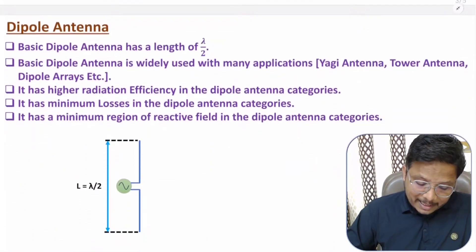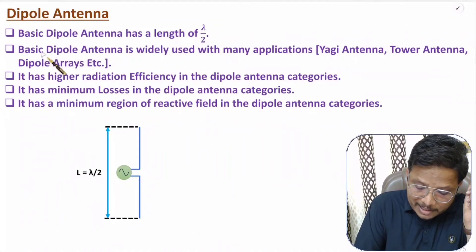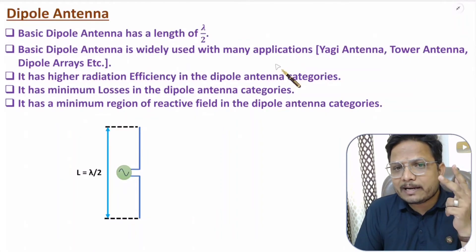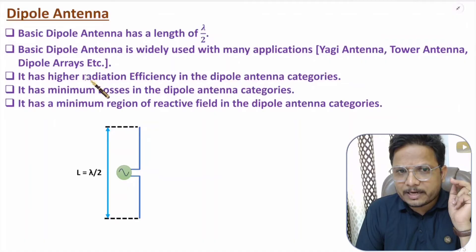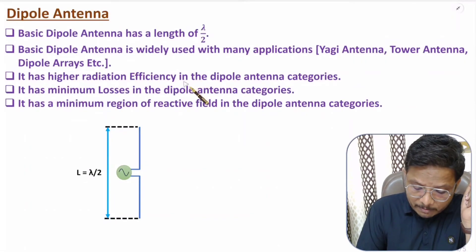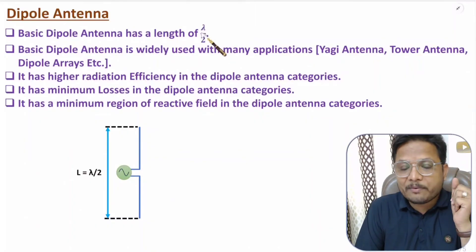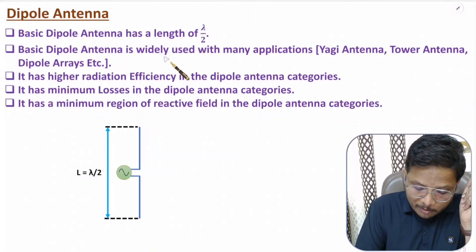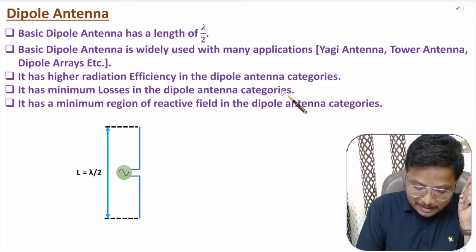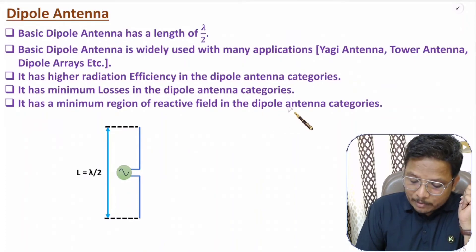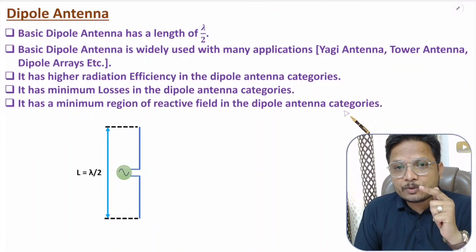The third category is the basic dipole antenna, which has a size of lambda by 2. This is widely used in many applications — like Yagi-Uda antennas, tower antennas, and dipole arrays. It has higher radiation efficiency because it has higher radiation resistance. With a dipole of size lambda by 2, we have a radiation resistance of 73 ohms, giving higher radiation efficiency, minimum losses, and minimum region of reactive field among all dipole antenna categories.